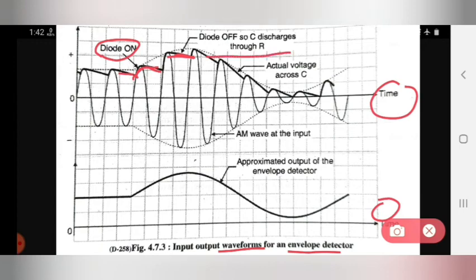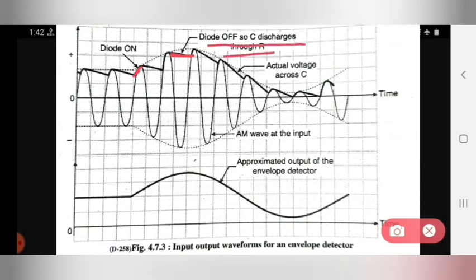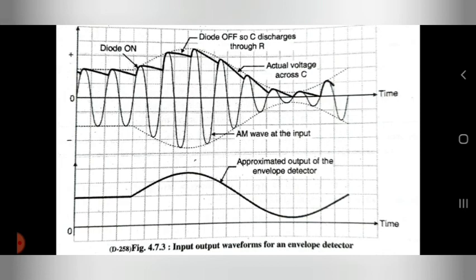When the diode is off, C discharges through R. This is the waveform showing the envelope detection process. In this way, this is the detailed description about the envelope detector.